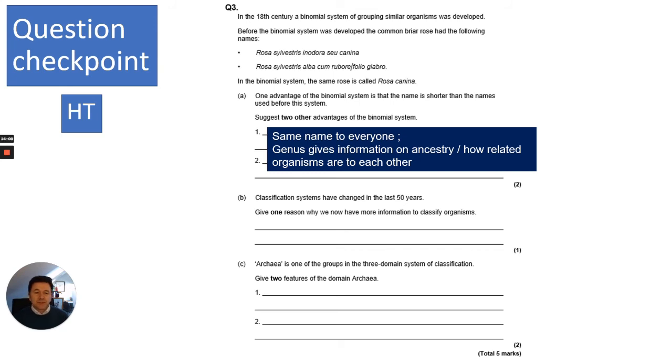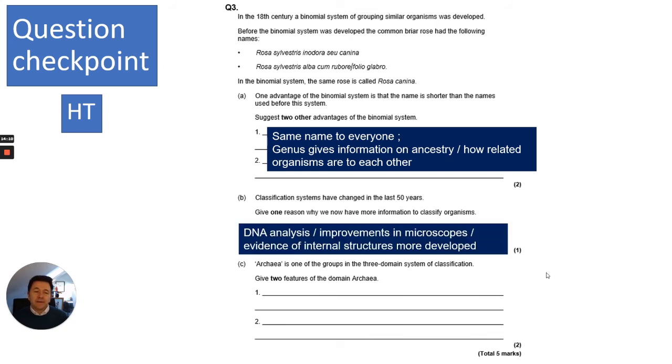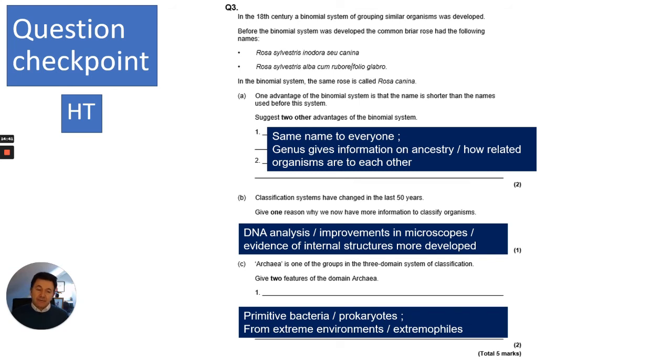Part B: Classification systems have changed in the last 50 years. Give one reason why we now have more information. I talked about Carl Woose and about DNA analysis. We've had discovery of DNA. Other things you could mention are things like improvements in microscopes, so the use of electron microscopes to allow us to look at internal structures of organisms and cells. Part C: Archaea is one of the groups in the three domain systems. Give two features of the domain Archaea. This is definitely higher tier. Archaea, if you remember, I did say it's a primitive bacteria or you could say they're prokaryotes, and they live in extreme environments, so you could mention that they are extremophiles.